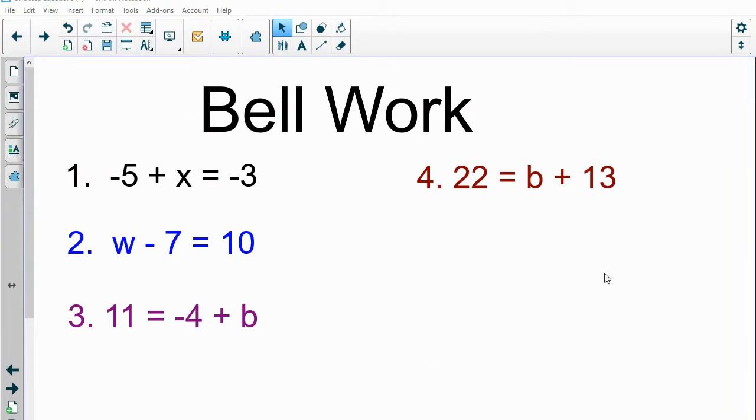To start off with, however, let's just review four quick questions that are the kind of questions we saw on our last assignment. For example, we have -5 + x = -3, w - 7 = 10.